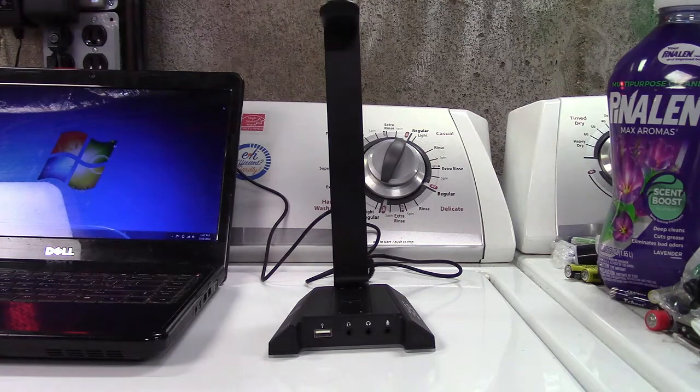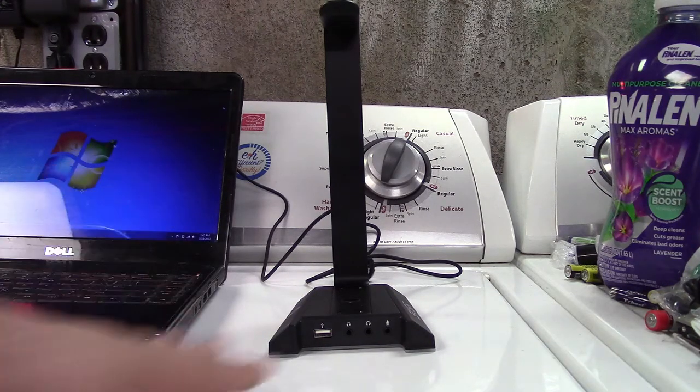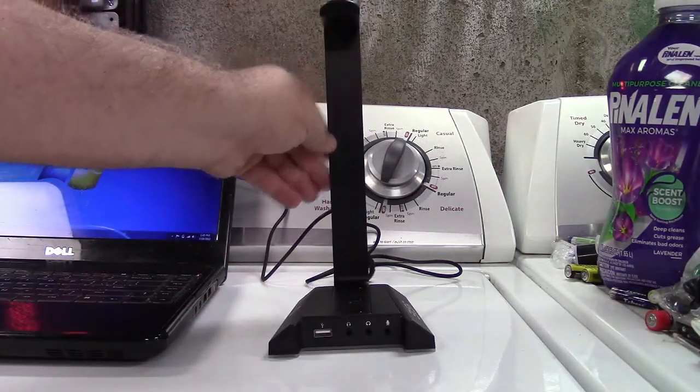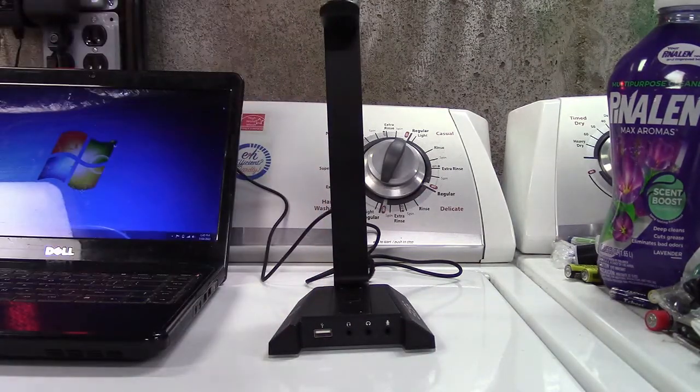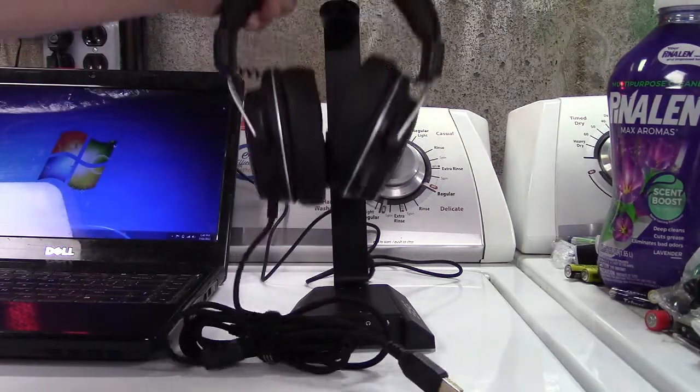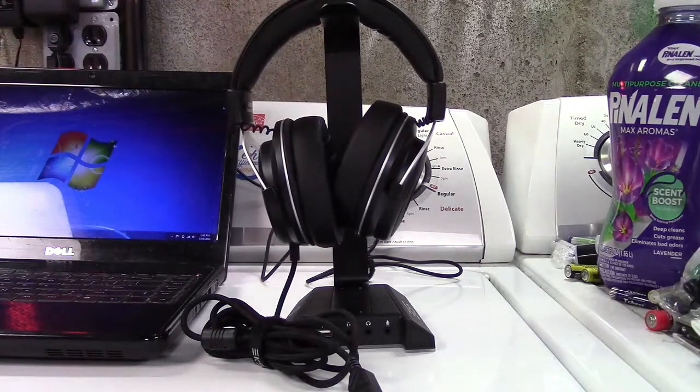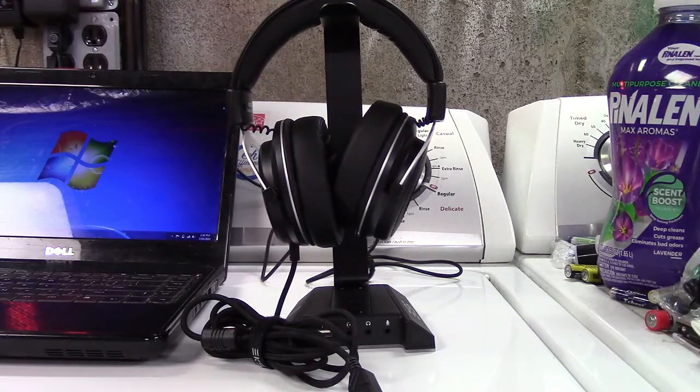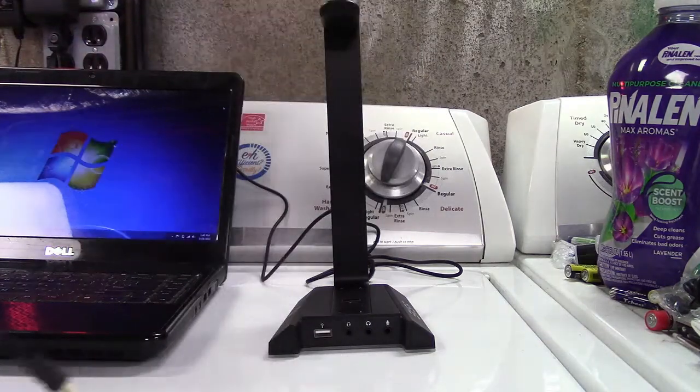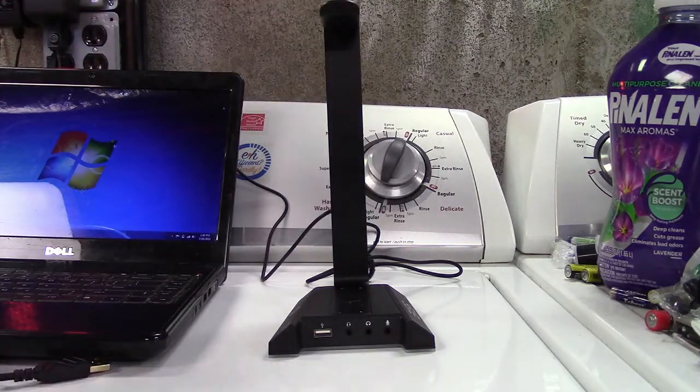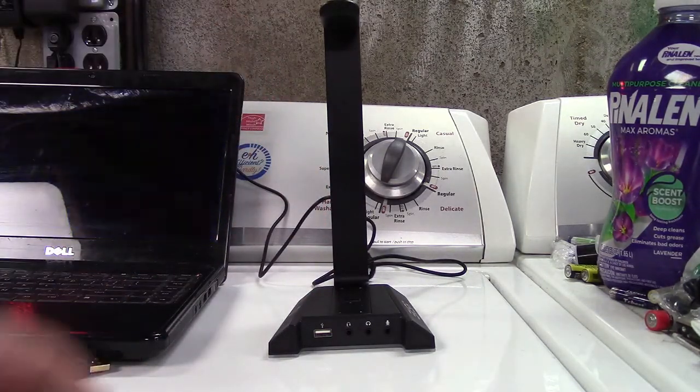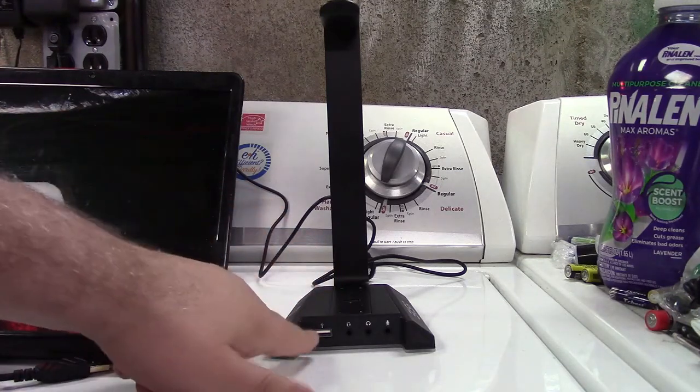And last, but not least, is the RGB headset stand. It sits crooked because my surface is far from level. So, it would stand normally straight up and down. Now, this, obviously, you have your headset, you've got to put it somewhere, so you can just put it right on there. But, I just have that. You can do a lot more with this. Plugs in USB to your computer. Back of the unit has a USB-C connection cable, of course, is included. You have two USB ports. Here and here.